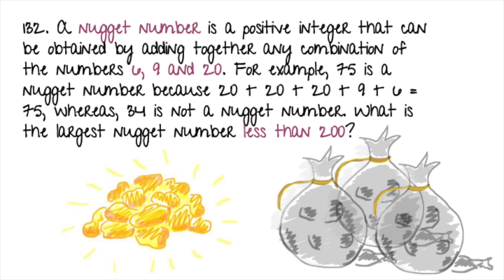A nugget number is a positive integer that can be obtained by adding together any combination of the numbers 6, 9, and 20.